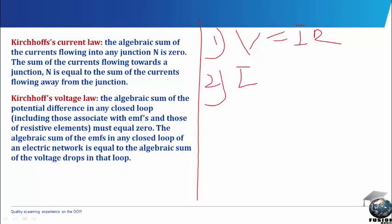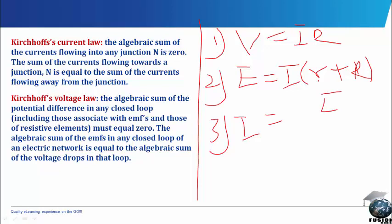Secondly, EMF is equal to I bracket R plus r, where small letter r is the internal resistance, capital letter R is the resistance of the load. From there, we can get I to be equal to E all over capital letter R plus small letter r.